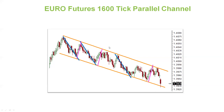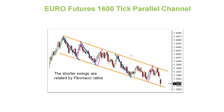We can see at the top of the parallel channel the price comes down, tests the bottom, back up to the top, back down to the bottom — this is repeating throughout. Notice how there are repetitions in the length of these swings. The blue lines show I drew from the top to the bottom of a swing, cloned the line, and dropped it over — they're almost identical in length. Some of these shorter swings will be related to the longer swings, usually by a Fibonacci ratio, such as 0.786.